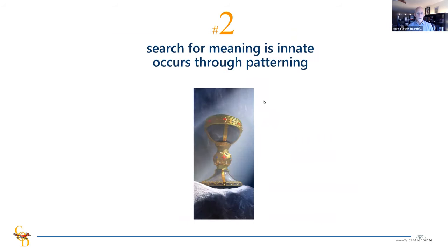Principle number two: the search for meaning is innate and occurs through patterning. Some of my neuroscience friends like to think of meaning as the holy grail of learning — the precious item that we in our learning process are seeking to find. It is literally the core ingredient to learning.